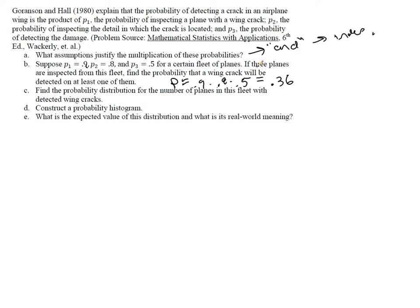Now, we want to know the probability that a wing crack will be detected on at least one of these three fleets that we're mentioning here. So there are three planes. Now, if we assume independence, if we assume that the probability is always the same, if we assume that there are three trials, then we would say that this is a binomial experiment with n equals three trials and probability of success equal to 0.36.